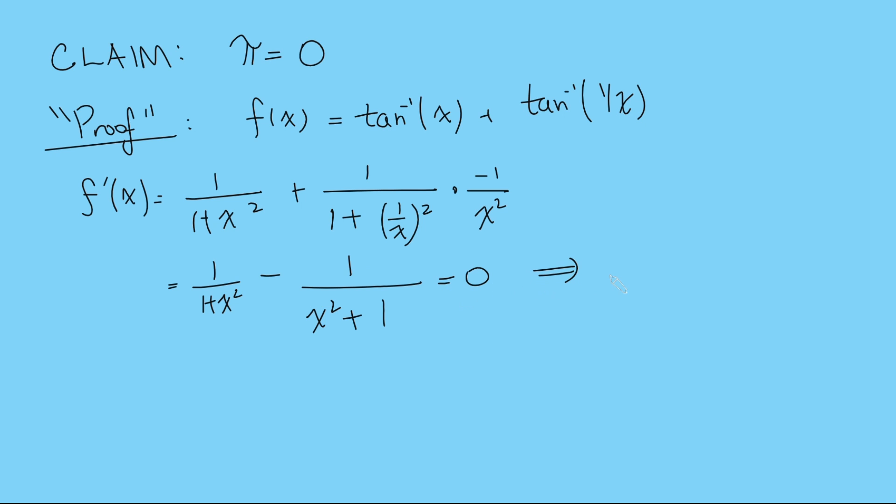So f prime of x is 0, but then that just means that f of x must be a constant function, so it's just some constant value.